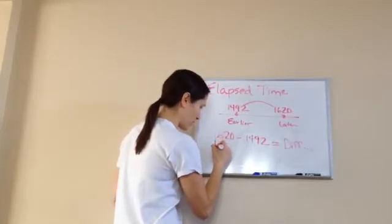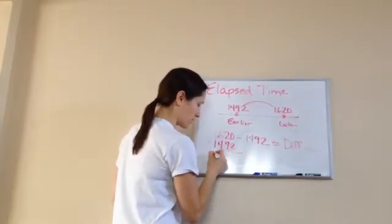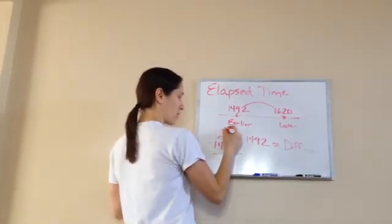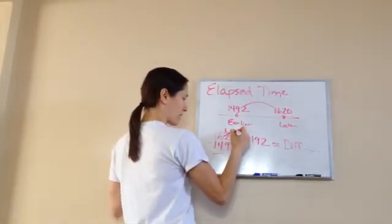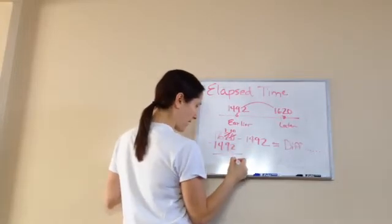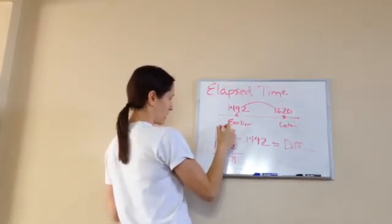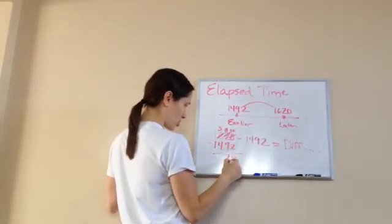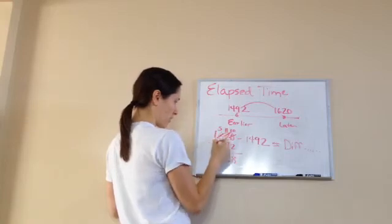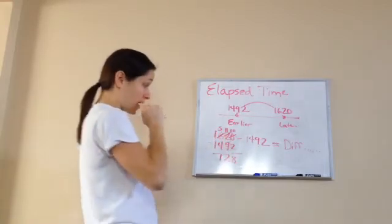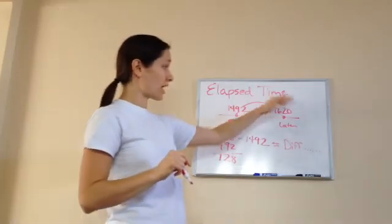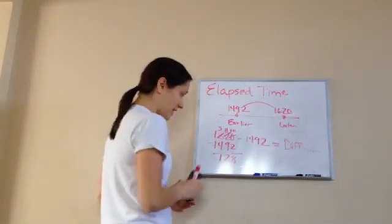So now I'm trying to figure out the difference, what is the elapsed time between the two. Two from zero, I need to borrow and bring one over, that will go eight. Nine, I have to come from one so I have to borrow another one, bring that over. Nine from eleven is two, four from five is one, and one minus one is zero. So how many years is in between the earlier time and the later time? 128. Very good. That's lesson 35.